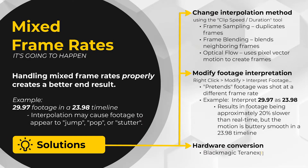In Premiere we can choose the interpolation method clip by clip via the clip speed/duration tool, or we can change the interpolation of an entire sequence when exporting. There are a few interpolation methods to choose from. Frame sampling duplicates frames to make up for missing frames. Frame blending mixes frames together to make a new frame. Optical flow estimates the vectors — the motion and speed of pixels — to generate a new frame.